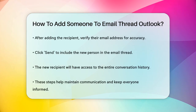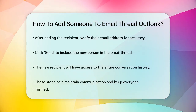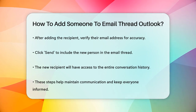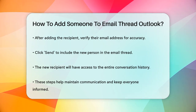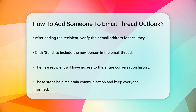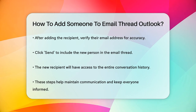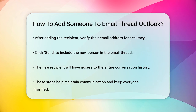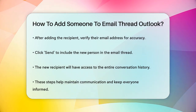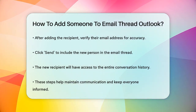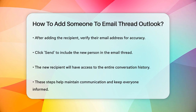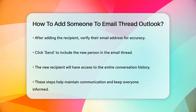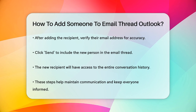Once you've added the new recipient, make sure to verify their email address to ensure it's correct. Then just hit the Send button and the new person will be included in the email thread. They will be able to read and respond to the entire conversation, even the parts that were exchanged before they were added. Using these simple steps, you can efficiently add someone to an email thread in Outlook, keeping everyone in the loop and ensuring smooth communication.